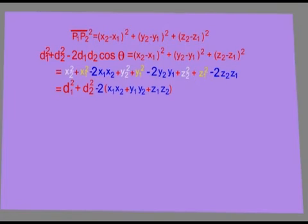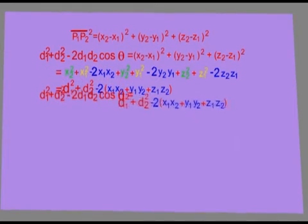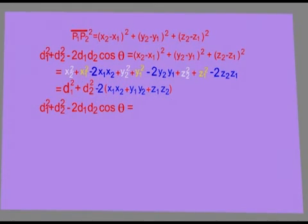They all have a minus 2 in common and is taken outside the brackets to become minus 2x1x2 plus y1y2 plus z1z2. Put both sides of the equation back together to obtain this.